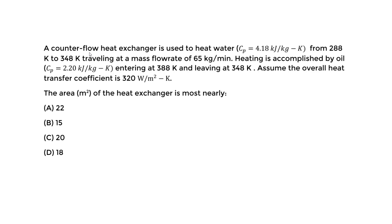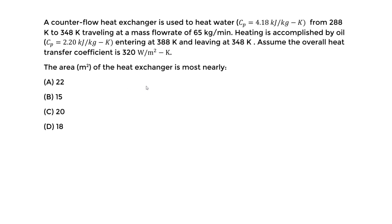Heating is accomplished by oil with a specific heat capacity of 2.20 kJ per kg Kelvin. The oil is entering at 388 Kelvin and leaving at 348 Kelvin. We assume the overall heat transfer coefficient U is 320 watts per meter squared Kelvin. What we want to find first is the area of the heat exchanger that would satisfy these conditions.